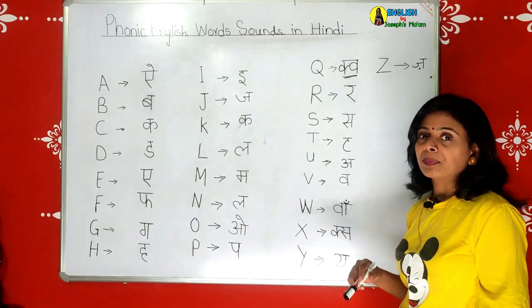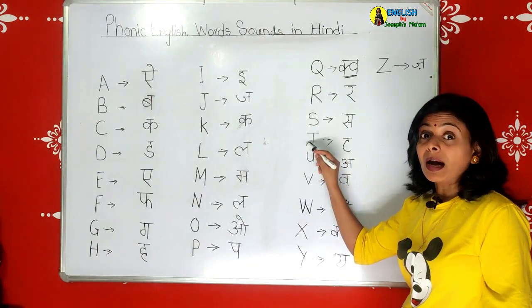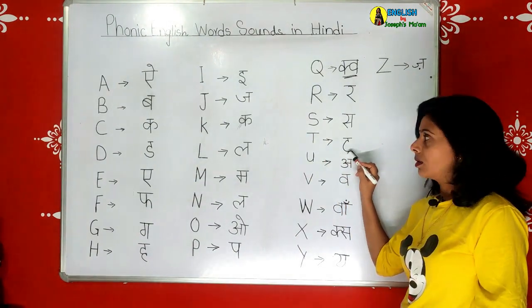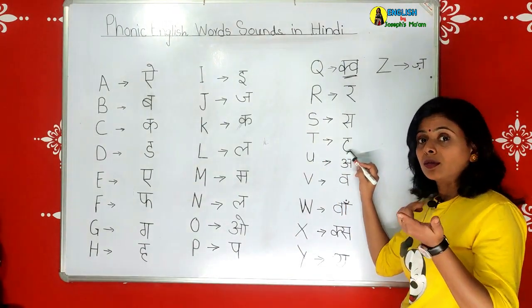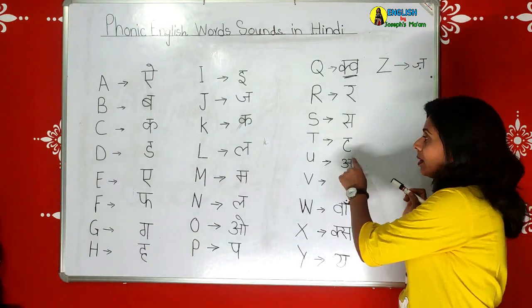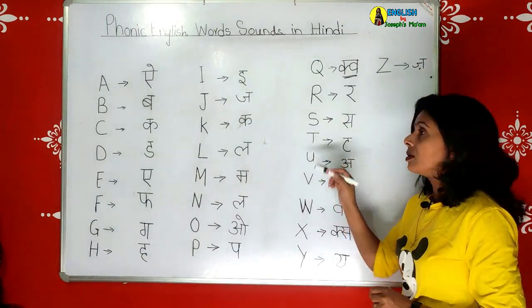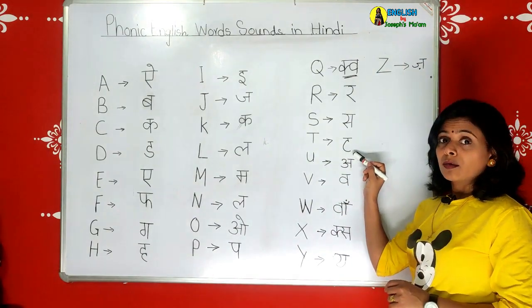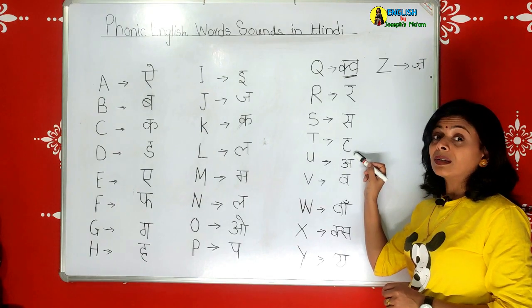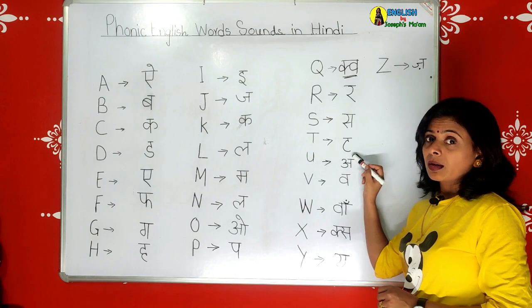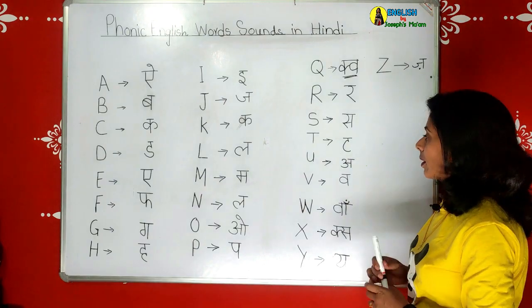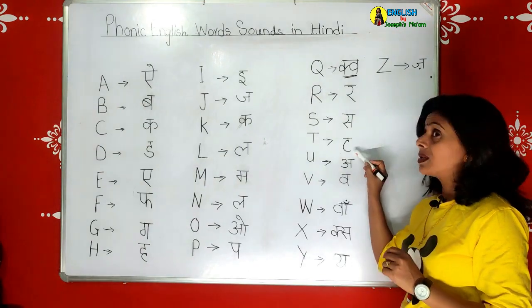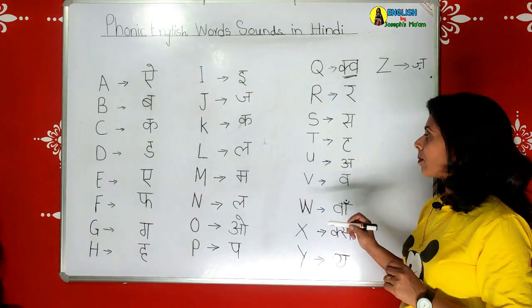The next one is T. T stands for 'ta'. T is for tiger - the Hindi phonic is 'ta'. Some say 'tiger' with a wrong sound - it's 'ta', tiger, 'ta'. T is also for tree - it is not 'tra', it is 'ta'. The Hindi word is 'ta'.